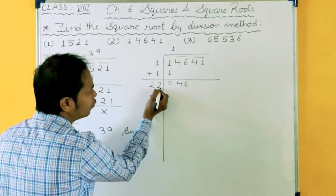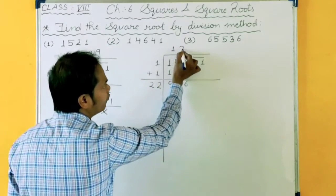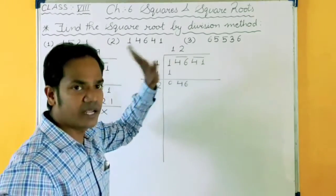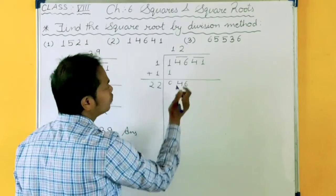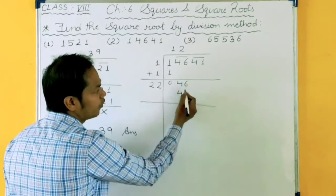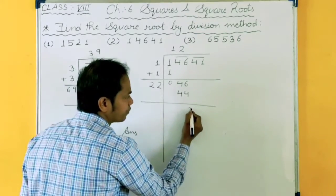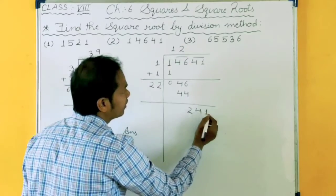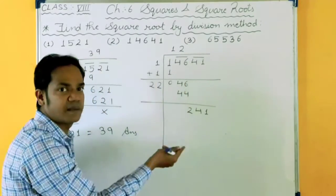So I will take here 2. So here also I have to take it, it is compulsory. The number that you have to take here. So 22 times 2 is 44. 46 minus 44 is 2. Then this pair I will take, 241. Again we will repeat the same step.